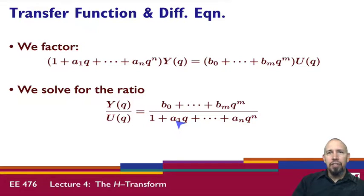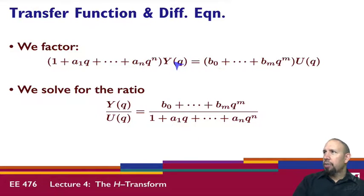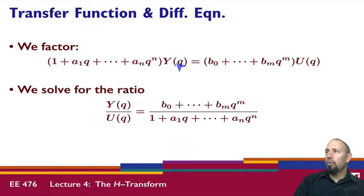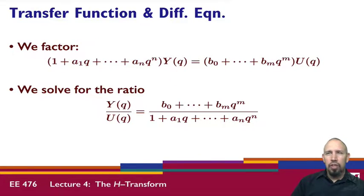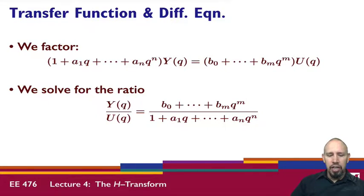If we start with a transfer function, we can easily go back to the difference equation by reversing the steps: cross multiply, distribute Y through the denominator terms and U through the numerator terms. We'll have powers of Q times Y, and taking the inverse Q transform using the integer time delay property gives delayed values of y. So we can go directly back and forth between a transfer function and a difference equation.